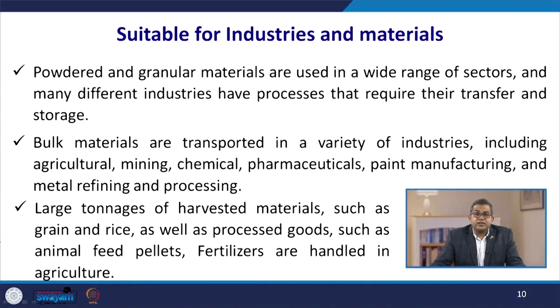Pneumatic conveying is suitable for various industries and materials. Powdered and granular materials are used in a wide range of sectors, and many different industries have processes that require their transfer and storage. Bulk materials are transported in a variety of industries including agricultural, mining, chemical, pharmaceutical, paint manufacturing, and metal refining. Large tonnages of harvested material such as grains and rice, as well as processed goods like animal feed, pellets, and fertilizers, are handled in the agricultural industry.